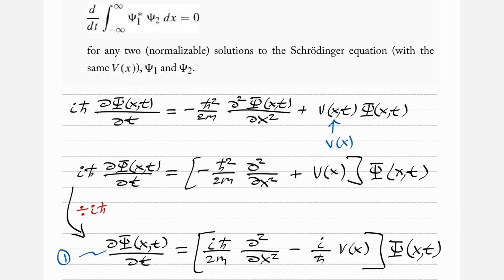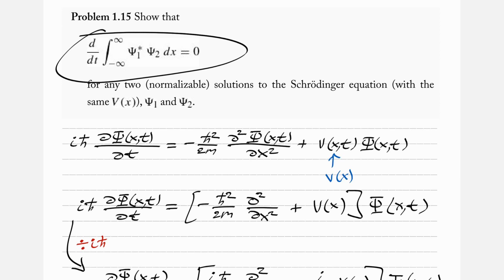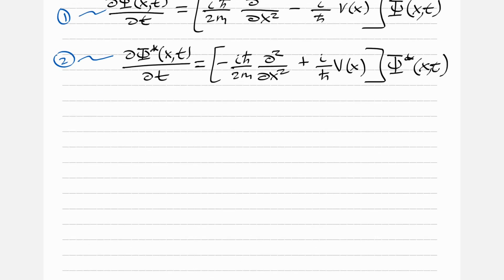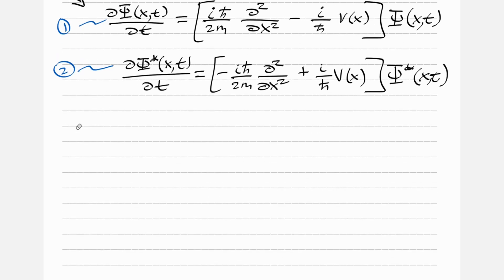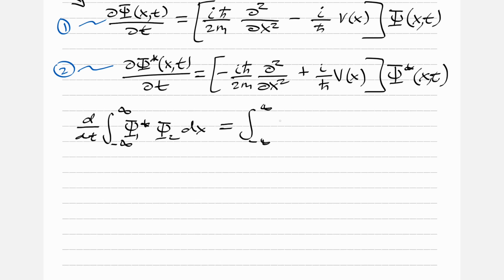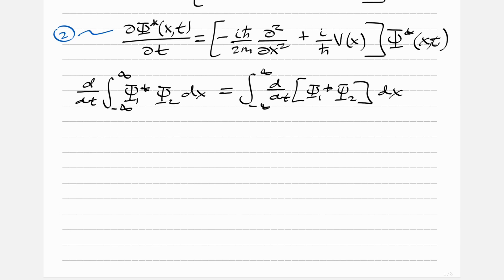We're doing this because we want to go back to the original integral and bring the time derivative inside, applying it to both psi 1 star and psi 2 using the chain rule. So: d/dt of the integral from minus infinity to infinity of psi 1 star psi 2 dx equals the integral from minus infinity to infinity of d/dt acting on psi 1 star psi 2 dx, which by the chain rule gives two terms.